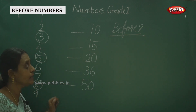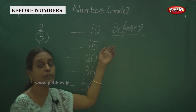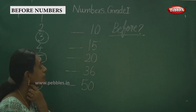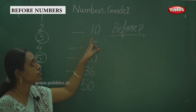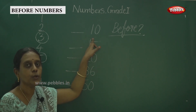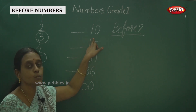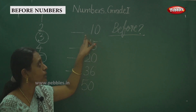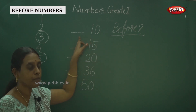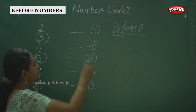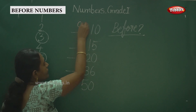We are discussing what is before. This number is 10. What comes before 10, children? That is 9. And this one is 15. What comes before 15?